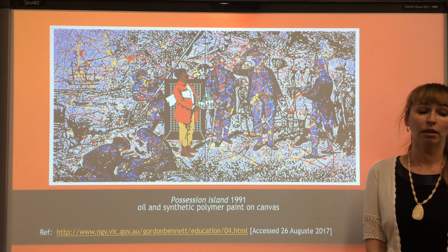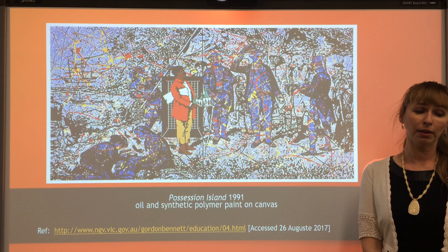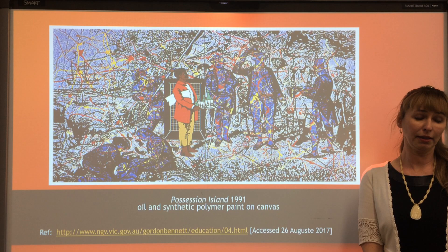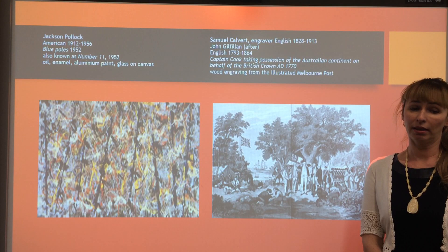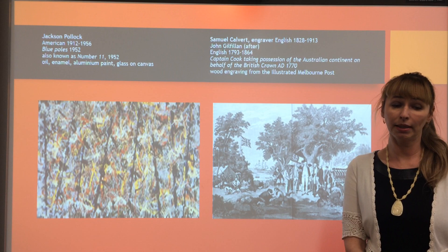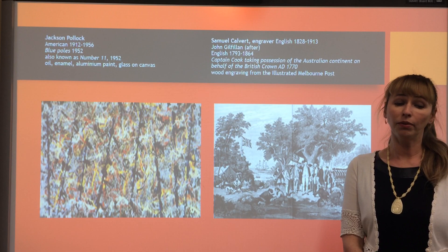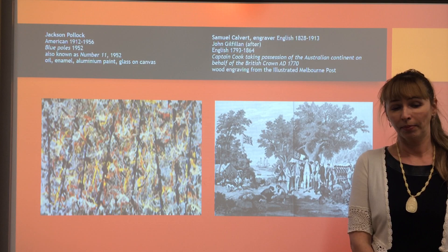Bennett focused on both postmodernism and postcolonialism in his work by questioning the alternative system in his art. Bennett often practiced borrowing images as a form of quoting. Possession Island is a good example of this. It reconstructs existing images to ask the viewer to question their assumptions of knowledge, identities, and beliefs, and to see alternative perspectives.